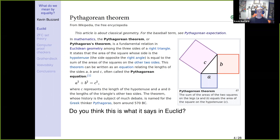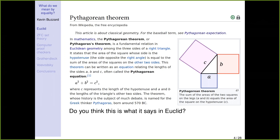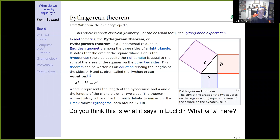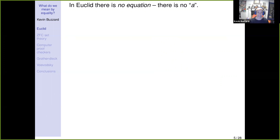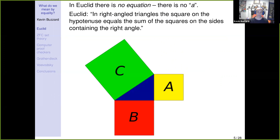It's probably more verbose than that. The sum of the areas of two squares is the third one. What is 'a'? Well, 'a' is the length, and the length squared is the area. But actually in Euclid there's no equation — there are no lengths at all, the sides are not labeled. Euclid says: in right-angled triangles, the square on the hypotenuse equals the sum of the squares on the sides containing the right angle.